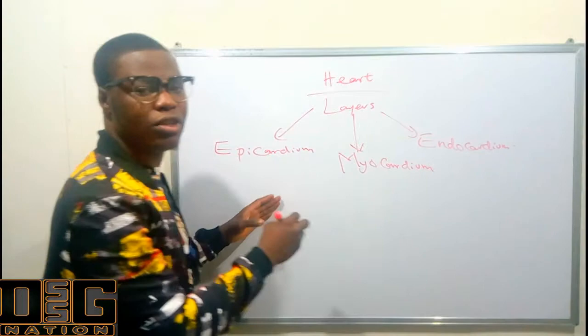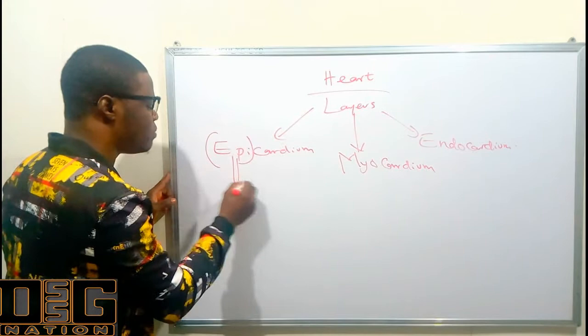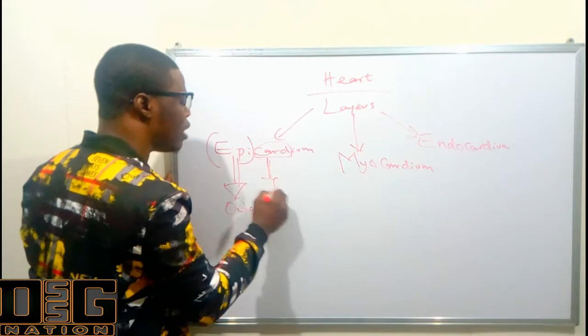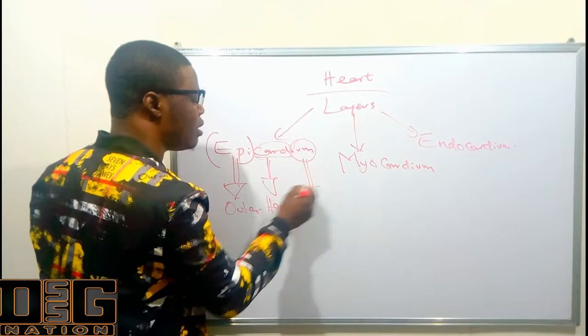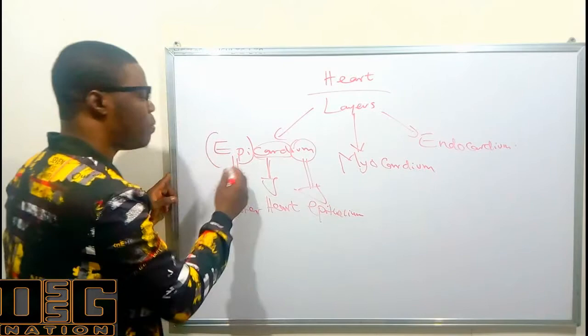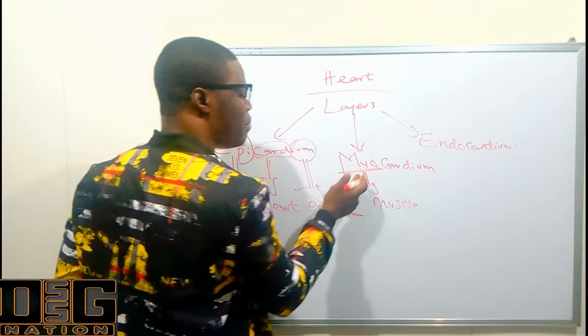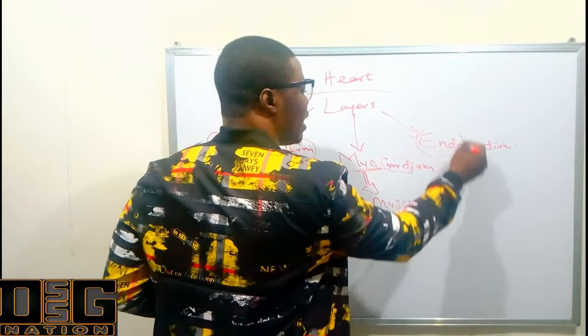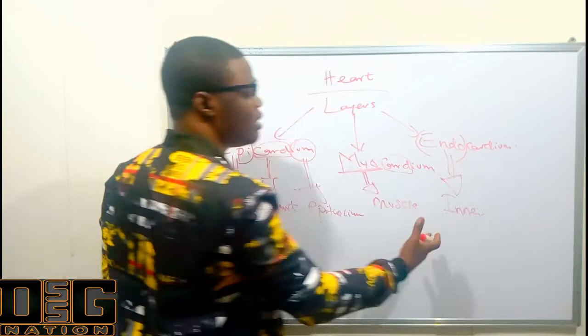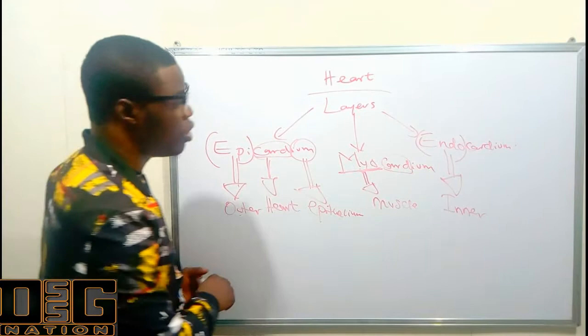The epicardium is the outermost layer of the heart. The myocardium is the middle layer — 'myo' means muscle, so it is the muscle layer of the heart. The endocardium — 'endo' means inner — is the innermost layer of the heart.